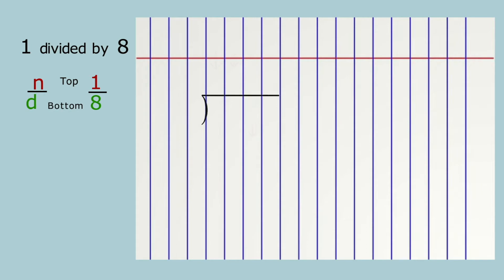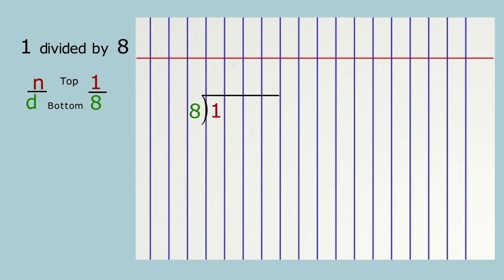The division bracket is like a little house. The numerator flies up and falls through the roof — only the numerator is tall enough to do that. The denominator tries to get in, but the denominator is blocked by the wall.